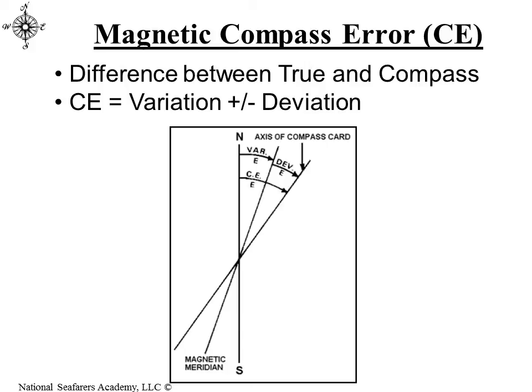The last thing worth mentioning is magnetic compass error. That's when you combine deviation and variation and take them as one whole — it's called compass error. In the example here, the variation and the deviation are both easterly, so the compass error is the sum of those two. Keep in mind that variation and deviation do not have to be the same east or west — you could have a large variation in one direction and a small deviation in the other direction. The compass error is the sum of the variation and deviation.